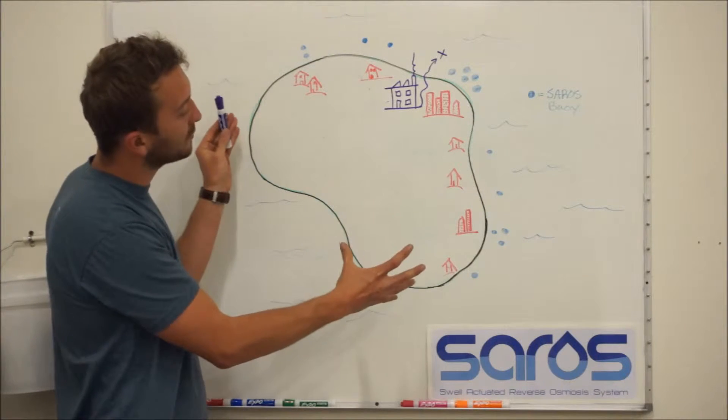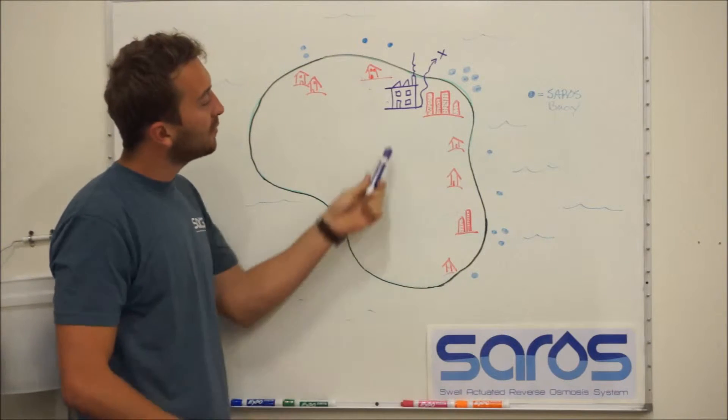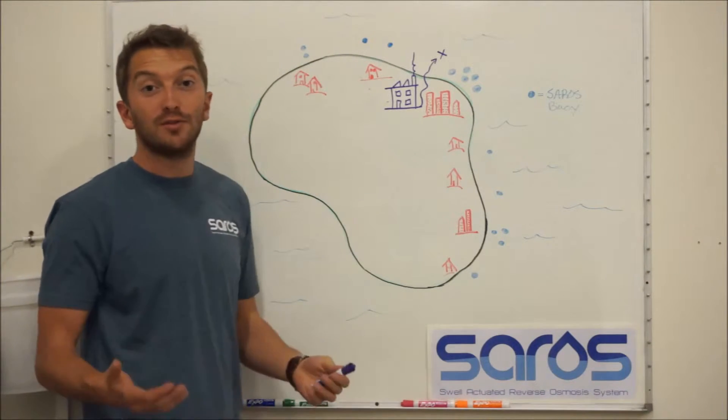This picture here shows an island and what a typical SARAS distribution may look like. This purple plant right here is a traditional desalination plant.